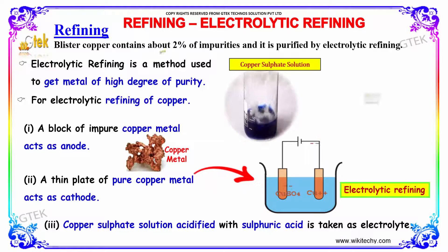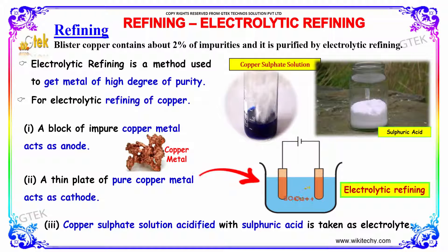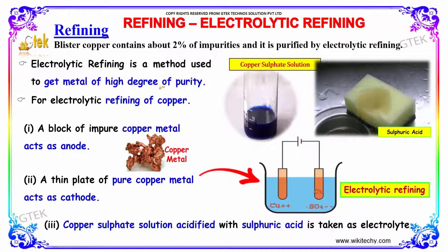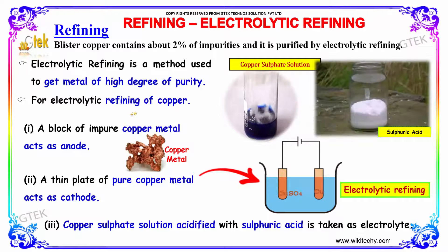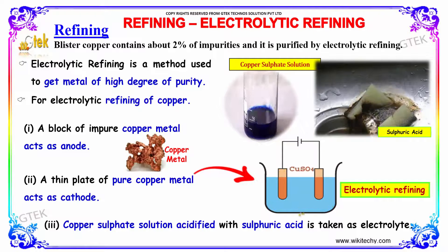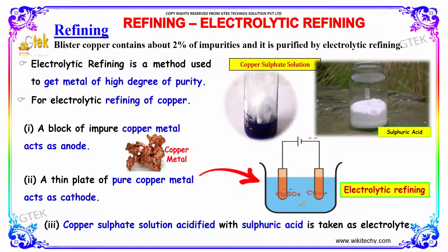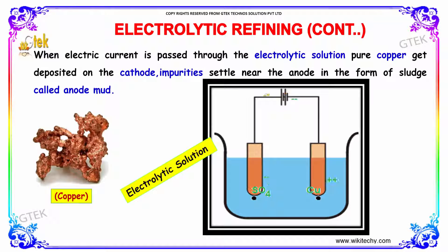Refining: blister copper contains 2% impurities and is further purified by the electro refining process. Electro refining is a method used to obtain metal of high purity. A block of impure metal acts as the anode and a thin plate of pure copper acts as the cathode. The electrolyte is a copper sulfate solution acidified with sulfuric acid. When electric current is passed, pure copper gets deposited on the cathode and the impurity settles near the anode in the form of sludge, also called anode mud.